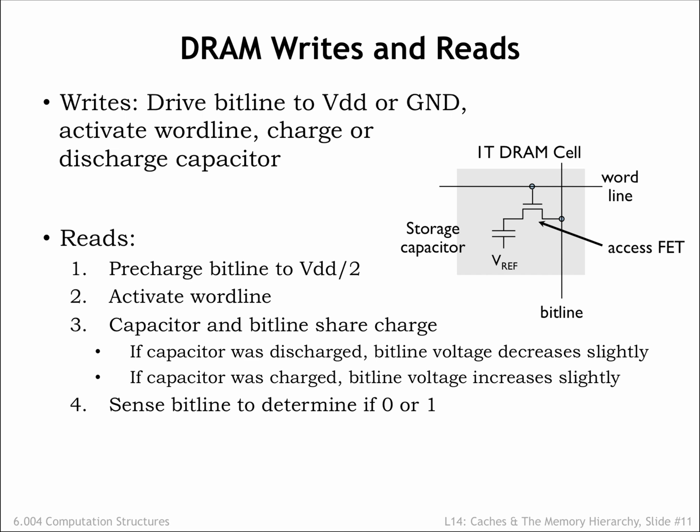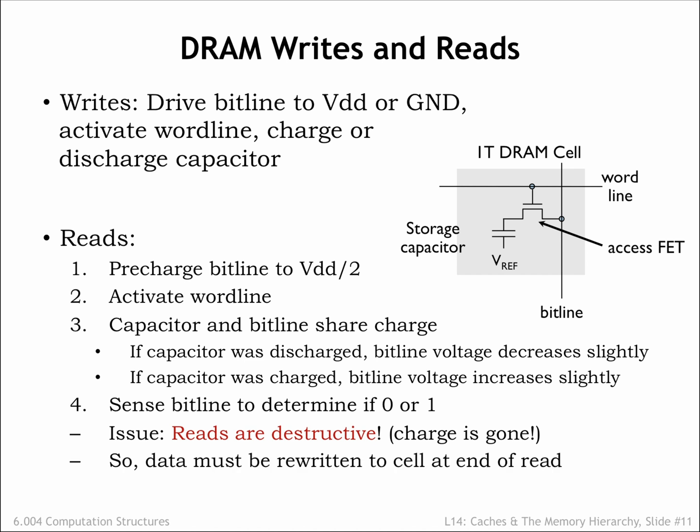If the value stored in the cell capacitor is a 1, the bit line voltage will increase very slightly — for example, a few tenths of millivolts. If the stored value is 0, the bit line voltage will decrease slightly. Sense amplifiers are used to detect the small voltage change to produce a digital output value. This means that read operations wipe out the information stored in the bit cell, which must then be rewritten with the detected value at the end of the read operation.